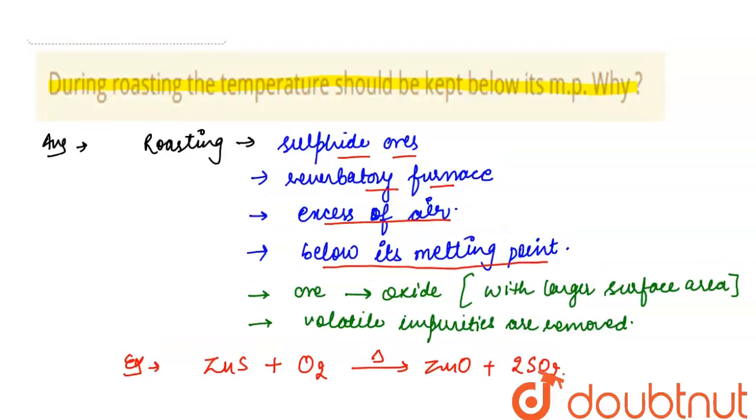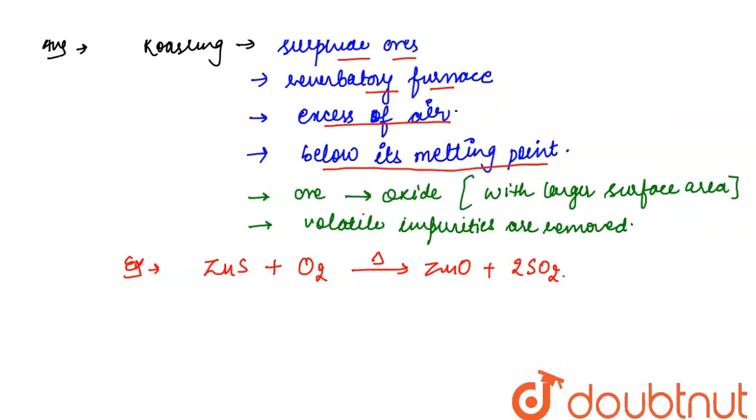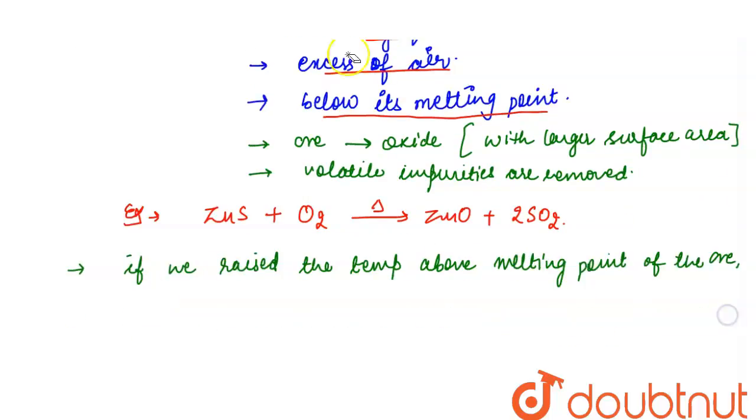So the temperature should be kept below its melting point. If we raise the temperature above the melting point of the ore, it will get mixed with volatile impurities and may vaporize with the impurities.